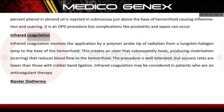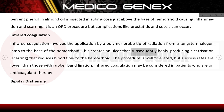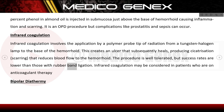Infrared coagulation involves the application of radiation from a tungsten halogen lamp via a polymer probe tip to the base of the haemorrhoid. This creates an ulcer that subsequently heals, producing cicatrization — scarring — that reduces blood flow to the haemorrhoid. The procedure is well tolerated but success rates are lower than those with rubber band ligation. It may be considered in patients who are on anticoagulant therapy.